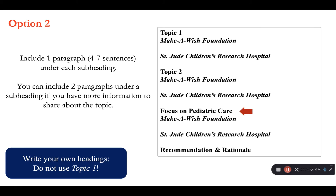In option two, you will provide a direct comparison of the nonprofits throughout your report on three topics. Each heading will be a topic or criteria that you are using to compare the organizations. Under each topic you will have a subheading to provide information about each organization. For example, the third topic here addresses the focus on pediatric care. The best option for your report depends on the organizations you select and the evidence you find.